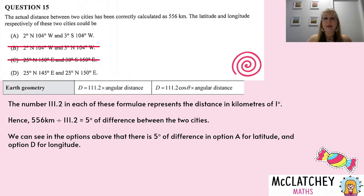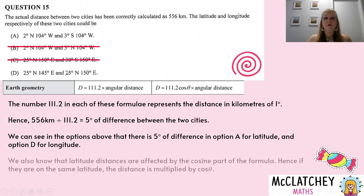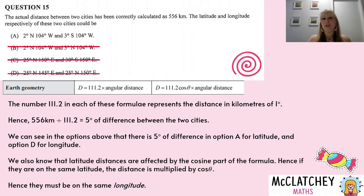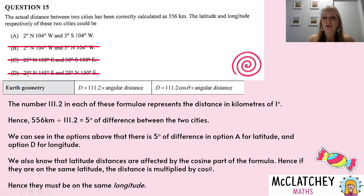We've narrowed it down to A and D. The question is: which one is correct — same latitudes or same longitudes? Option A has the same longitudes of 104 degrees; option D has the same latitudes of 25 degrees. The straight formula — 111.2 times degrees — applies when traveling along the same longitude, so it has to be option A. If it were option D with same latitudes, we'd need to multiply by cosine of 25 degrees, and the result would not be 556 kilometers.